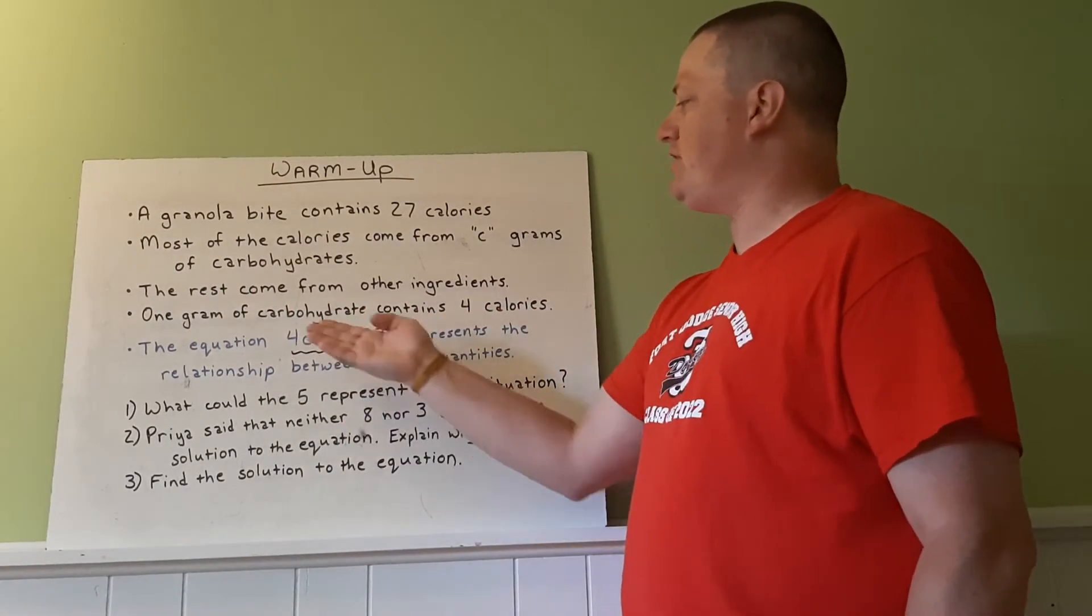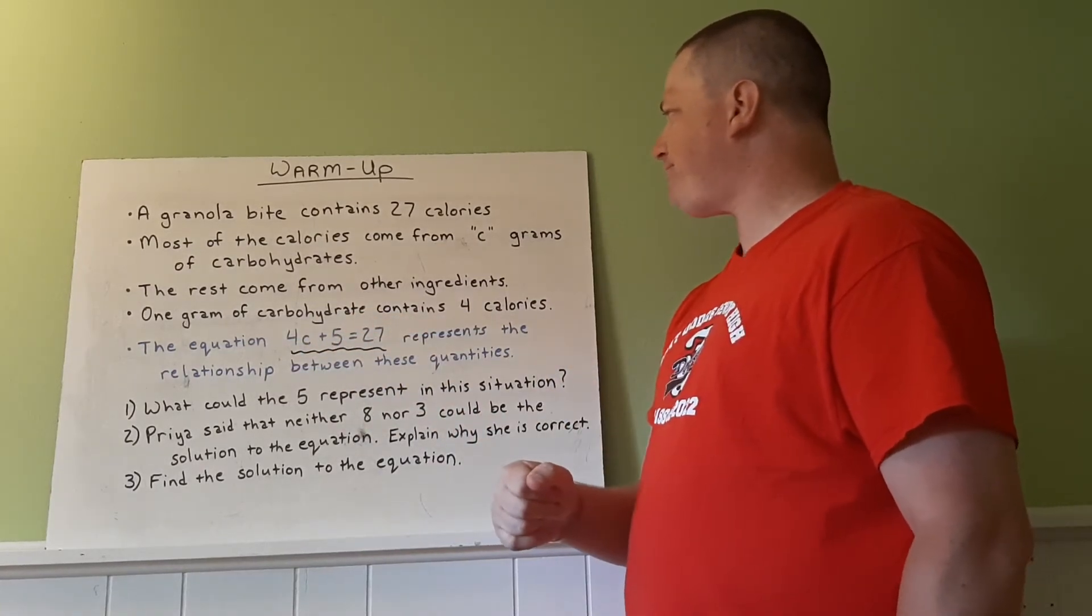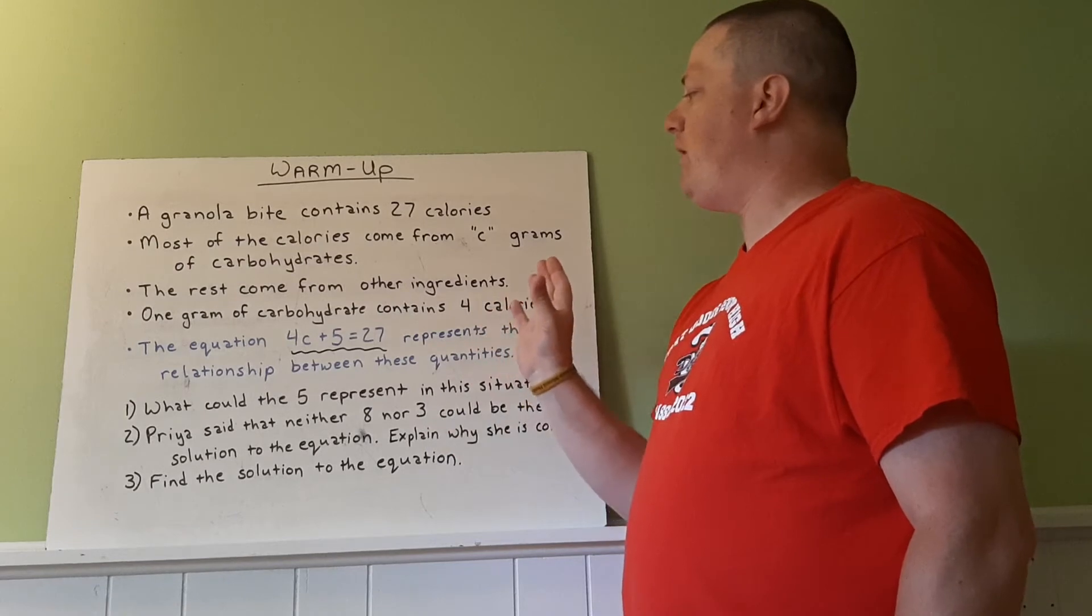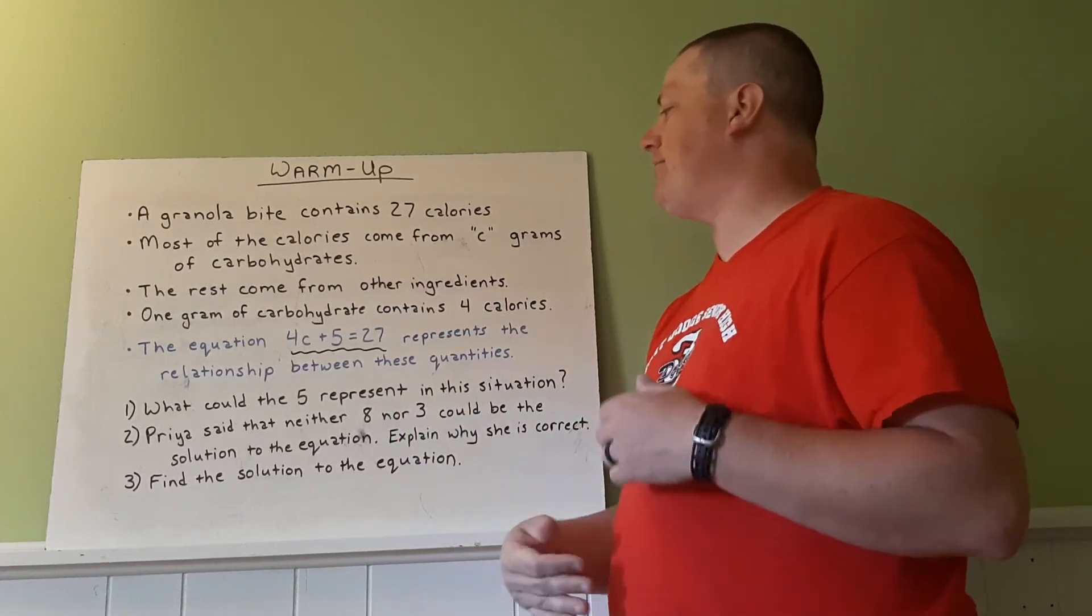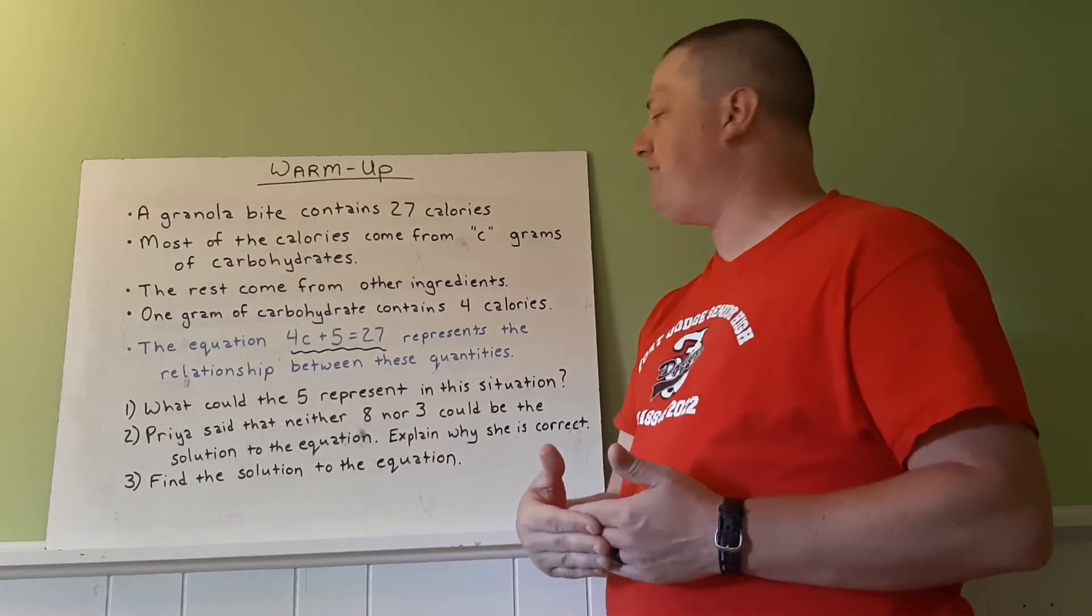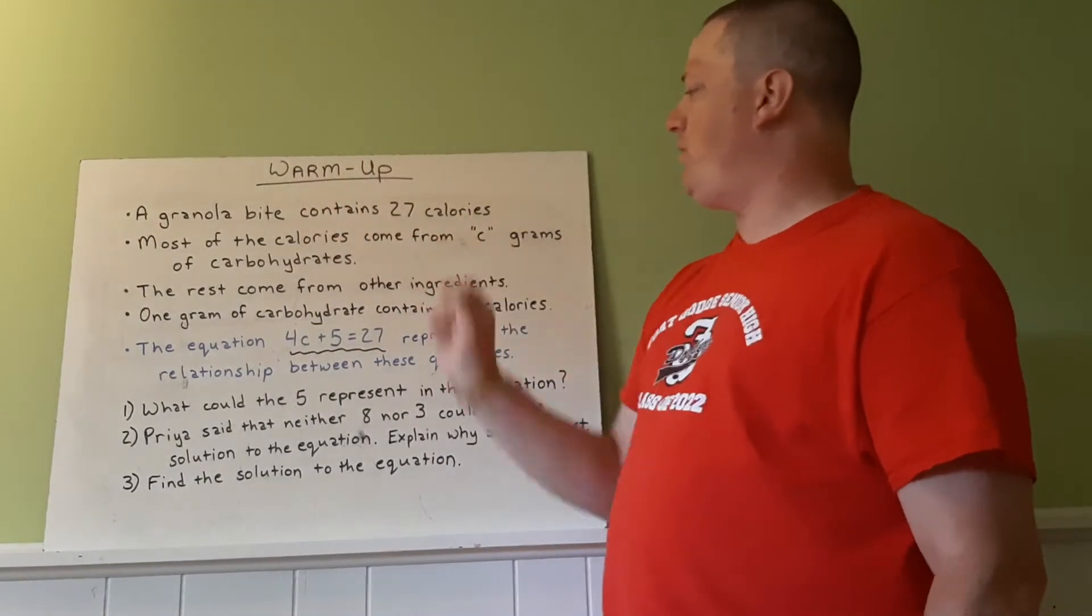So if you notice, we have the equation 4C plus 5 equals 27. So what you need to do is understand where the 4 comes from, where the C comes from, where the 5 and the 27 come from. So this is representing this situation above.